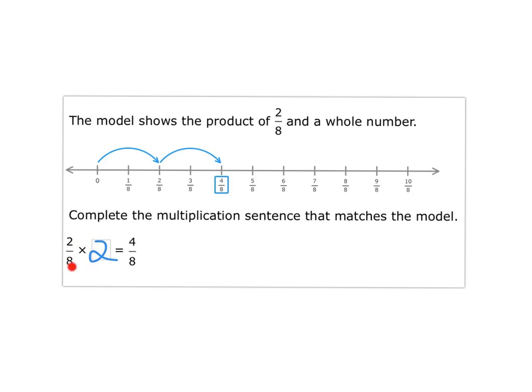You can also tell by the numbers. Remember the denominator stays the same. And it was 2 times what is 4? Well, 2 times 2 is 4.